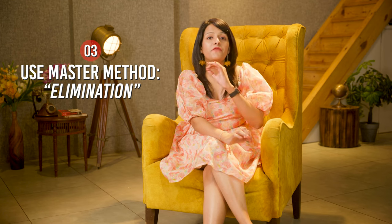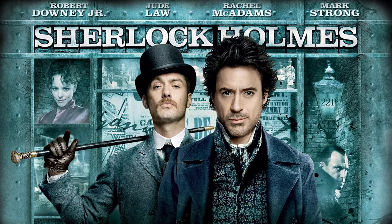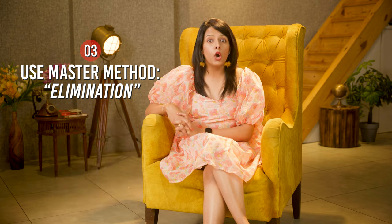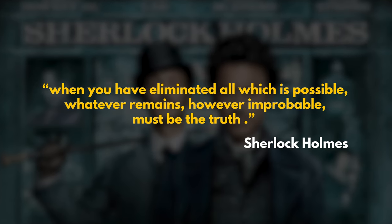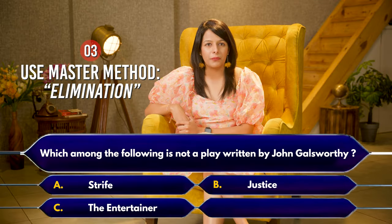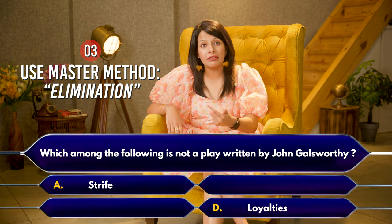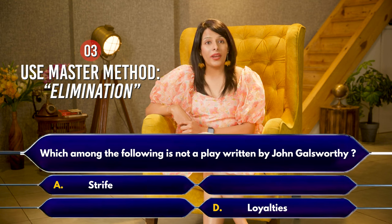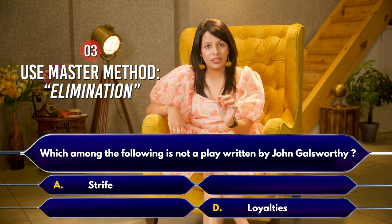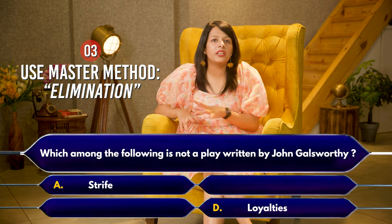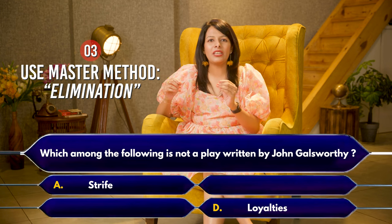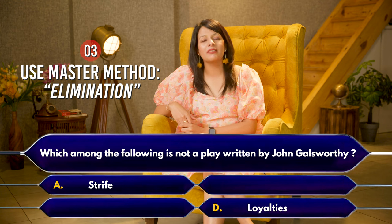Moving to point number three: the elimination technique. This is one of my favorite tips, inspired by the fictional character Sherlock Holmes, created by Arthur Conan Doyle in the 19th century. In The Casebook of Sherlock Holmes, Doyle writes: 'When you have eliminated all which is possible, whatever remains, however improbable, must be the truth.' Apply this to the four options in the paper — after eliminating the wrong options, the one which remains shall be the correct one. Whenever you are confused between two options, use the elimination technique rather than taking a shot in the dark, making your answer far more probable.